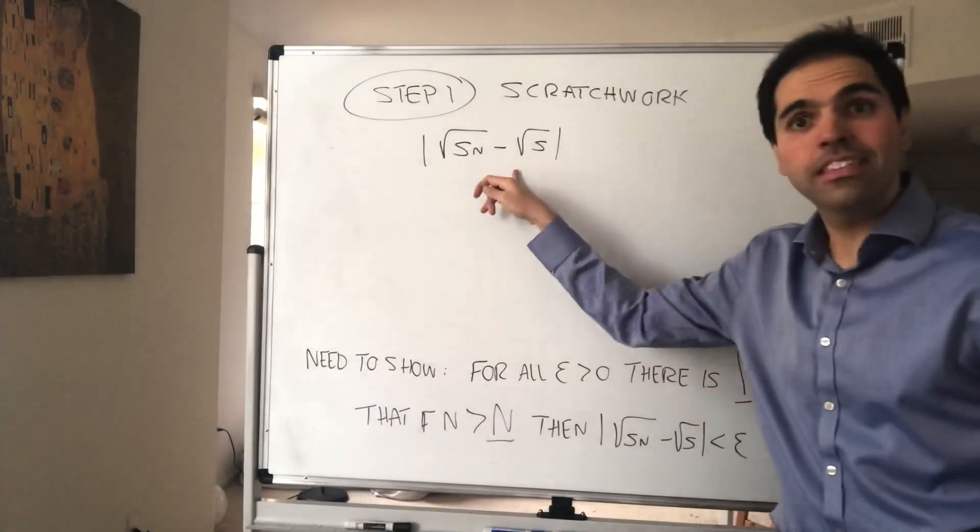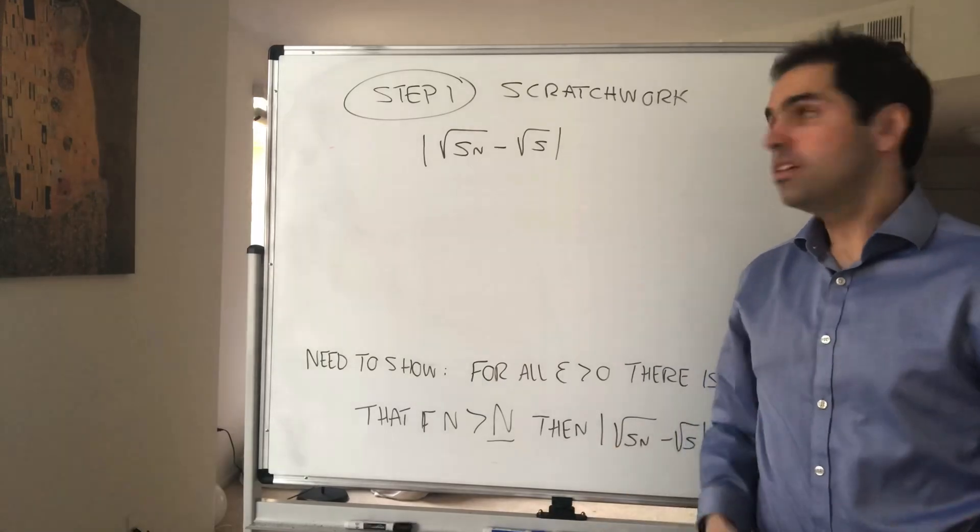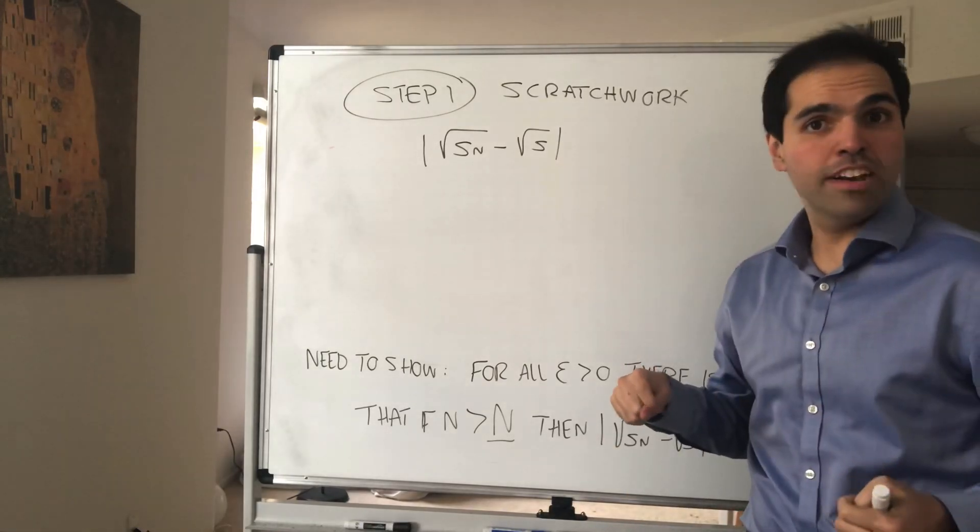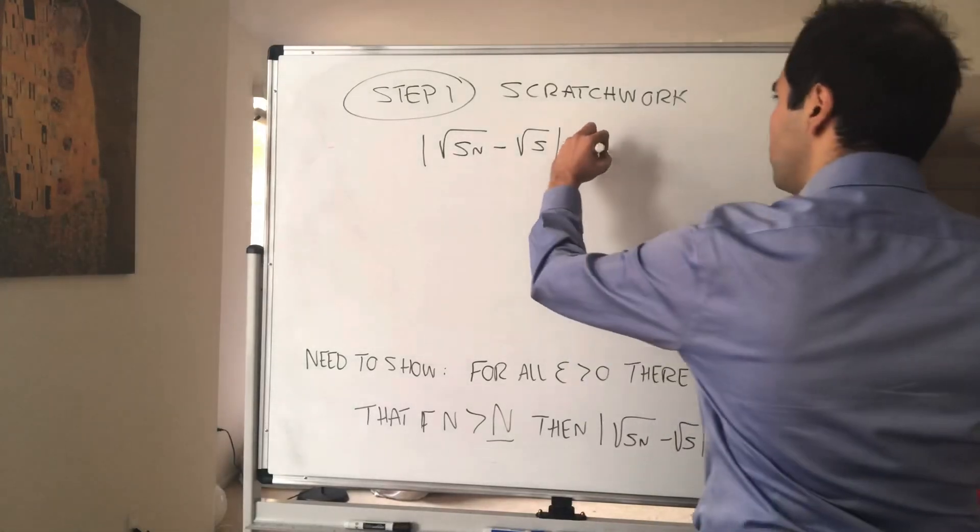Don't forget your calculus techniques. If you remember a while back, how would you deal with limits involving square roots? Well, one trick that's very useful is just multiply by the conjugate form.